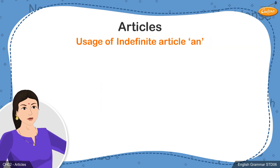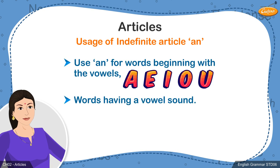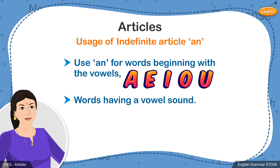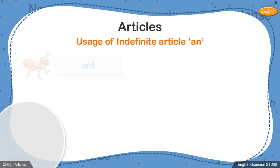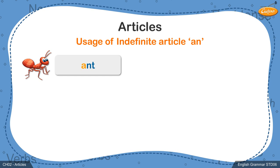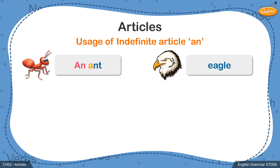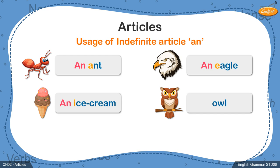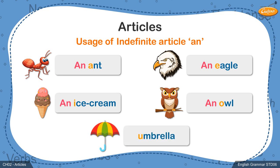Let's now have a look at the usage of the other indefinite article an. For the words that begin with vowels — that is the letters a, e, i, o, and u — you would use an. An ant begins with a, so you would say an ant. Eagle begins with e, so you would say an eagle. Ice cream begins with i, so you would say an ice cream. Owl begins with o, so you would say an owl. Umbrella begins with u, so you would say an umbrella. Here the sound of the vowels is perfectly heard and therefore the indefinite article an is used.